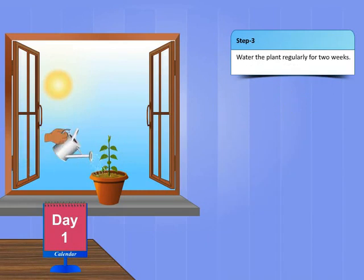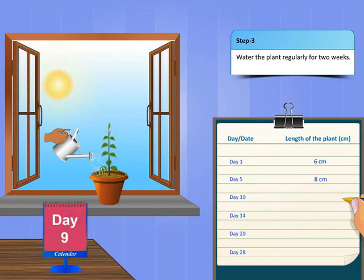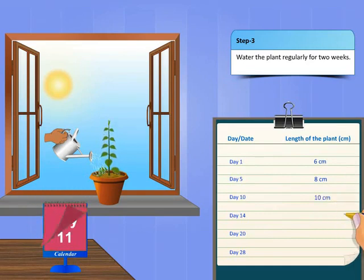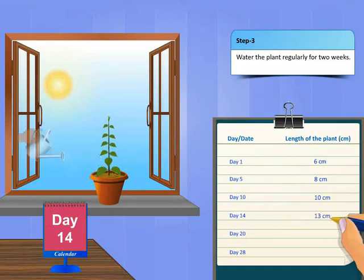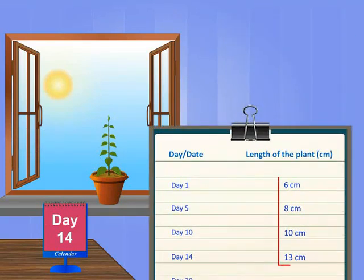Now water the plant regularly for two weeks, and note down its length on day 5, day 10, and day 14. What do you observe? You'll observe that the length of the plant has increased over a period of two weeks.